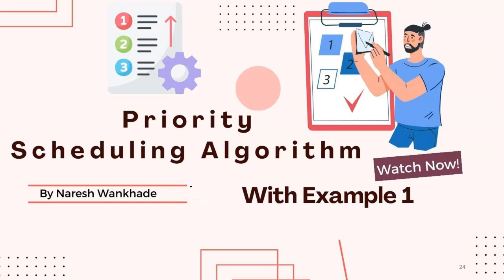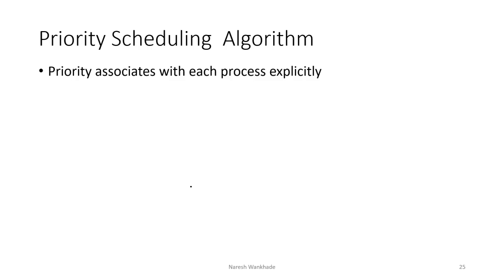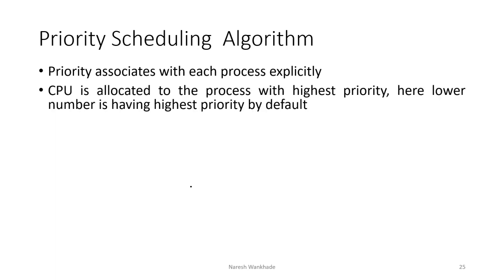In this video lecture we will see the priority scheduling algorithm, which is also known as priority based scheduling algorithm, with its example. In this algorithm, priority is associated with each process explicitly — meaning priority is clearly mentioned for each process, where the CPU is allocated to the process with the highest priority. By default, lower number has the highest priority.